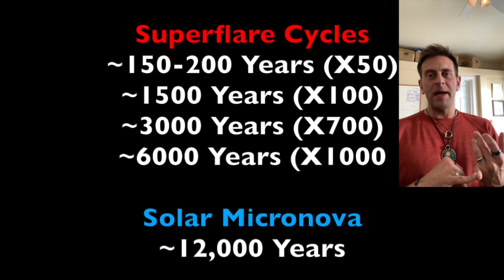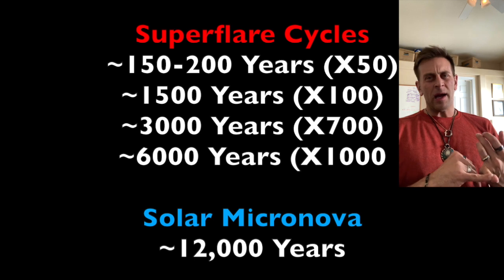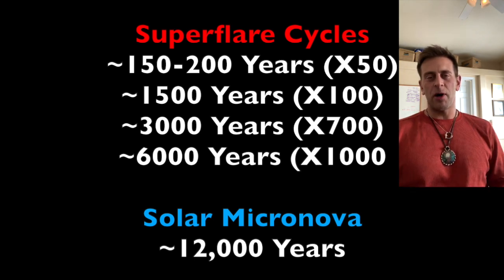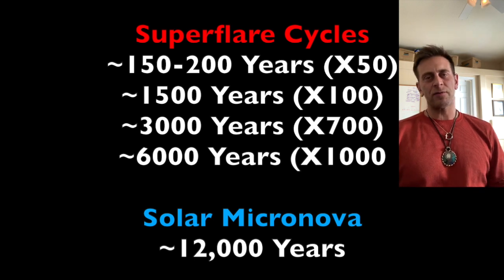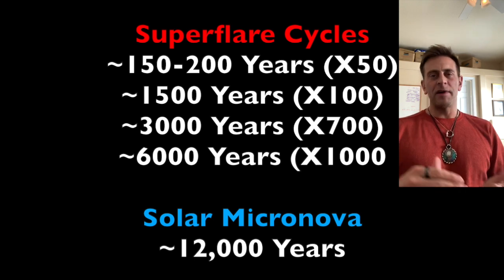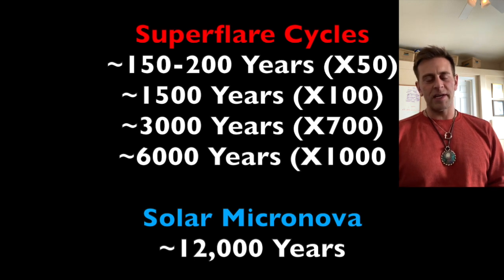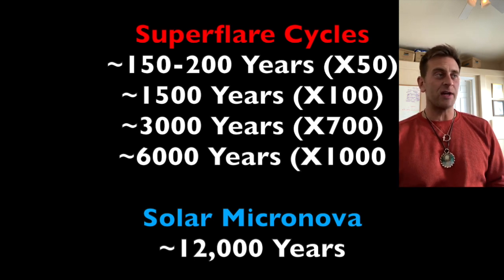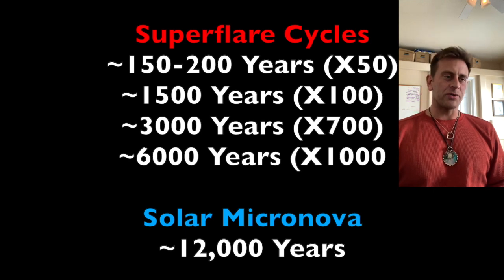To reiterate: we have the major flares on the smaller end — the 150 to 200 year cycle, like the Carrington event, somewhere around X40 to X50 — then moving up towards about X100 on the Dansgaard-Oeschger cycle every 1,500 years. Then the 3,000 and 6,000 year cycles, and of course we all know what's coming on the 12,000 year cycle, which we are up against here in the coming years.